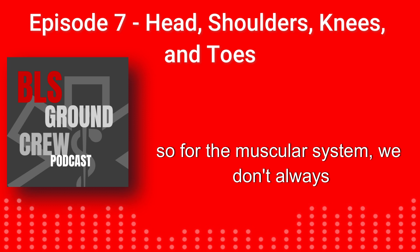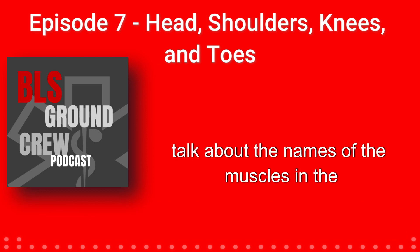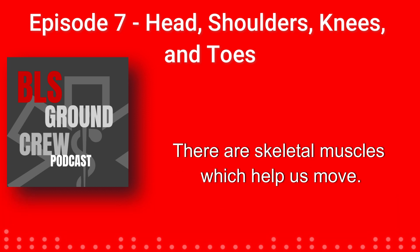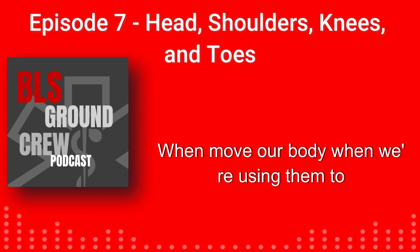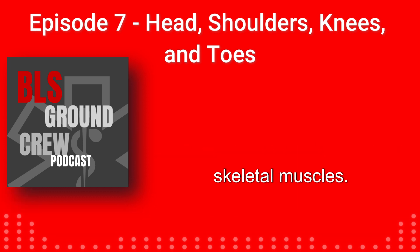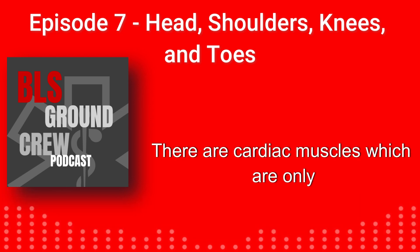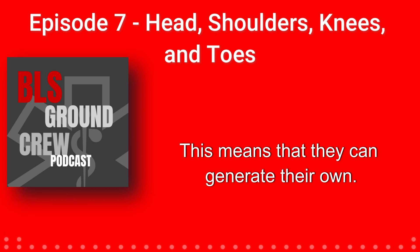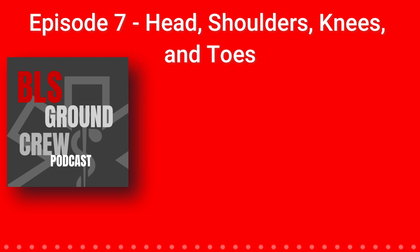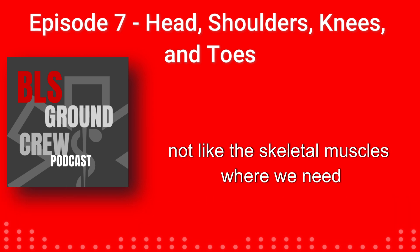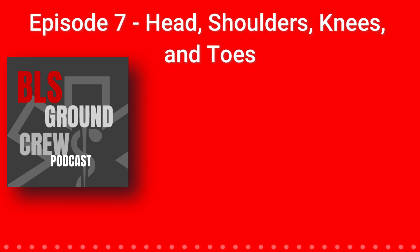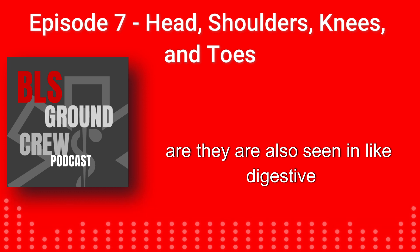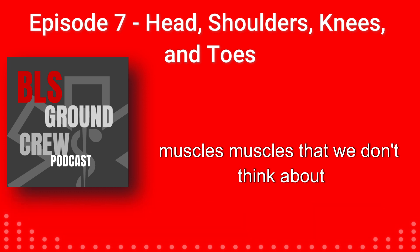For the muscular system, we need to know there are three types of muscles. Skeletal muscles help us move our body by moving the bones — they require the brain to activate them. Cardiac muscles are only found in the heart and have automaticity, meaning they can generate their own electrical currents without the brain telling them to. Smooth muscles are found in vasculature and the digestive system — muscles we don't consciously think about moving.